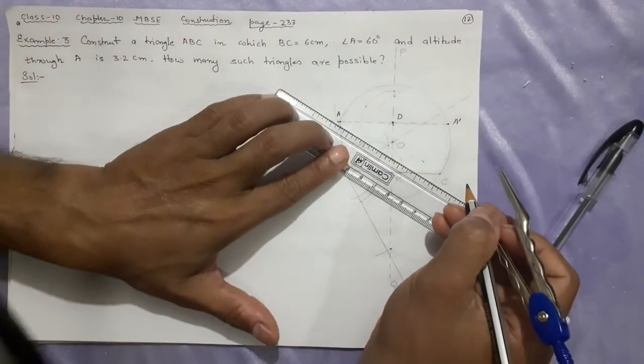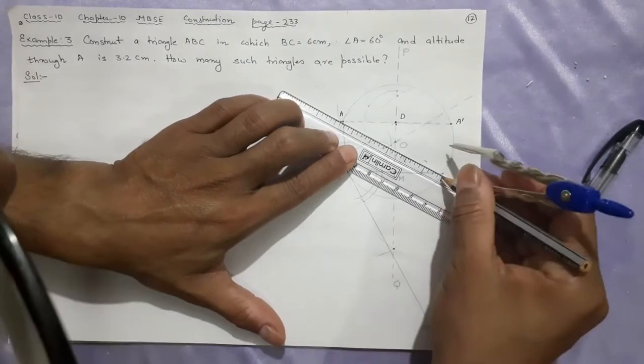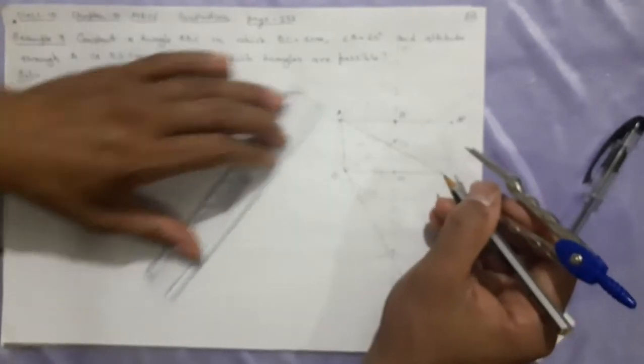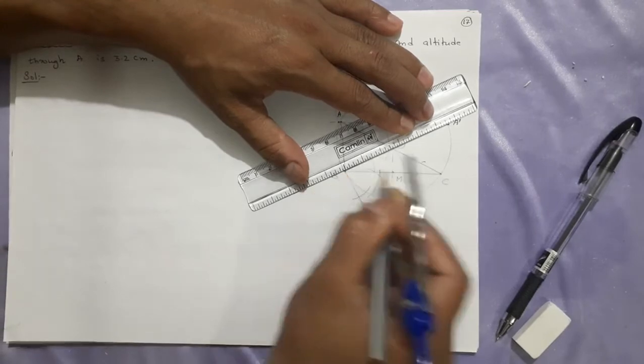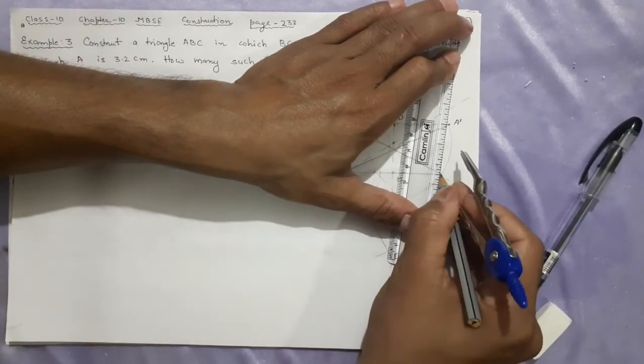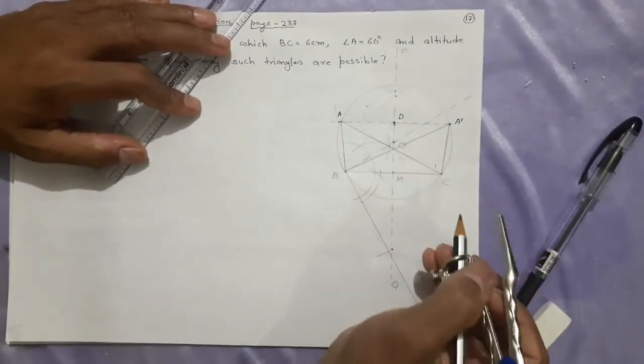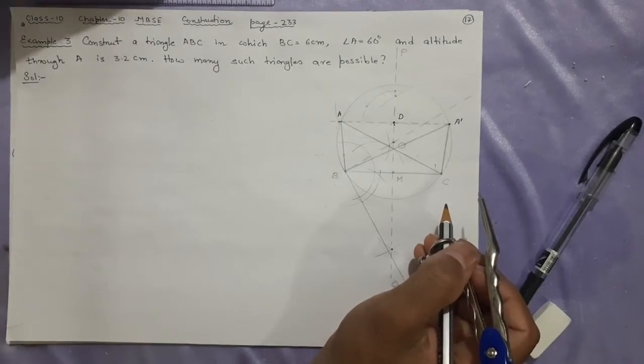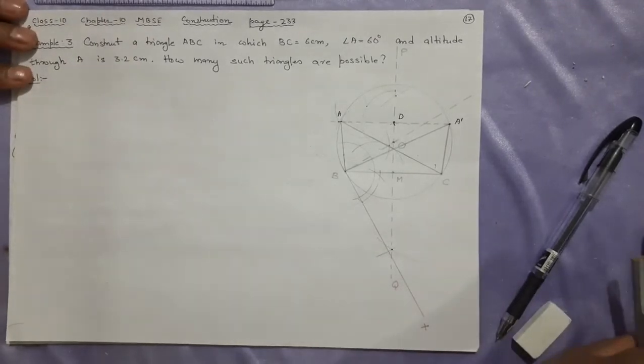Now you are going to join those points. That is the required triangle. A will be joining, A dash, A will be joining B, and again C will be joining A this way. This is the triangle. In the question you see how many triangles are possible? We have made two such triangles. ABC is a triangle, and A dash B joined, A dash C is also joined. So these are the two triangles required. ABC and A dash BC are the two triangles we need to make. This is all solved. Now we will be writing the steps of construction.